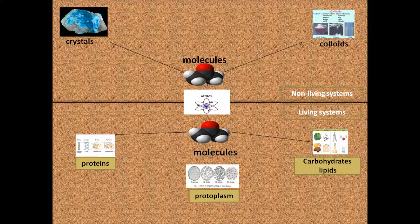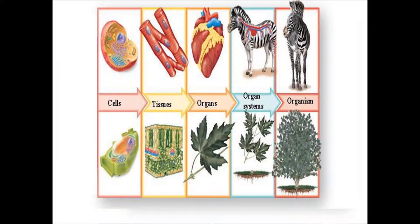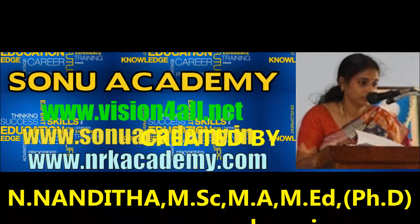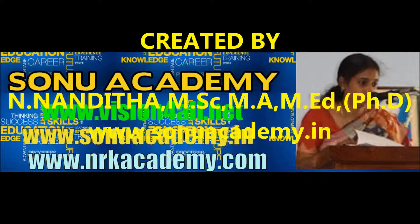These molecules are further organized into protoplasm, protoplasm into cells, cells into tissues, tissues into organs, organs into organ systems, and then into an organism. Organization continues beyond organisms to form a population, communities, ecosystem, and biosphere. In biological systems, structure is related to function. We will discuss this in the next coming videos. Thank you. This is Nanduram and we are from Sunu Academy.